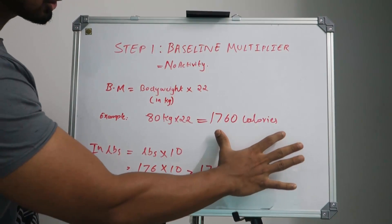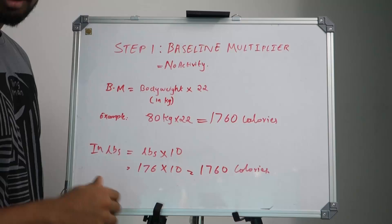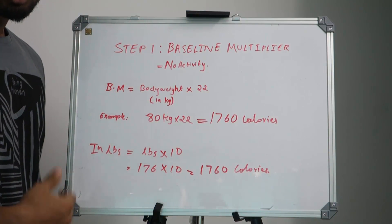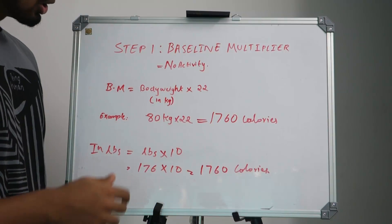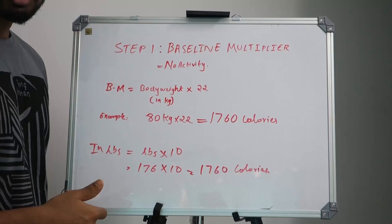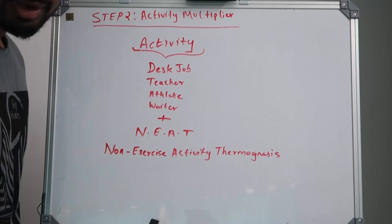Once you get your baseline multiplier, then we move to the activity multiplier. Activity multiplier is something where we use your activity as well. Make sure you perform this step. The next step in this process is also very simple.